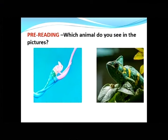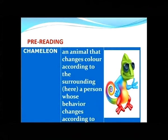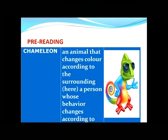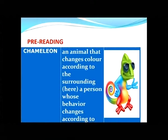And in English it's called a chameleon. Repeat after me: chameleon. A chameleon is an animal that changes color according to its surroundings. But in our story we are not going to read about the animal chameleon. You must be wondering — is the teacher going to give a lesson on biology? No, no, no. We are going to read a story about a person. This is the second meaning: a person whose behavior changes according to the situation.